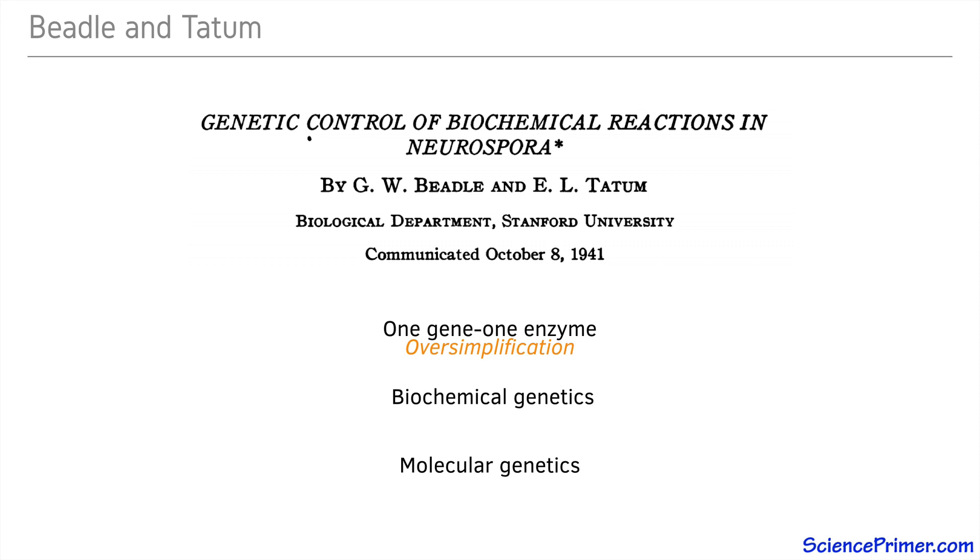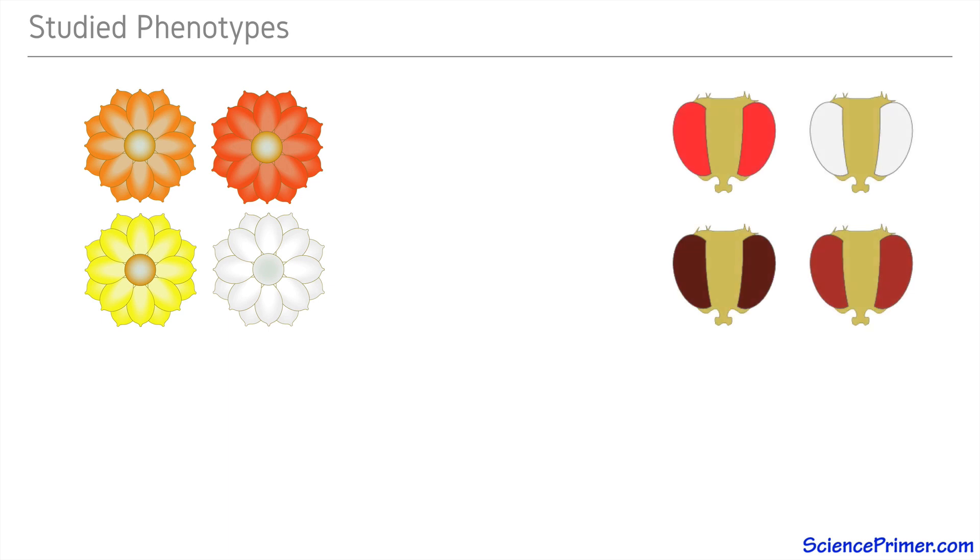Central to the success of Beadle and Tatum's work was their selection of the fungi Neurospora crassa as their research organism. At the time, most research on the genetic basis of metabolic pathways had been performed on visible traits such as pigment color in flowers or eye color in fruit flies.